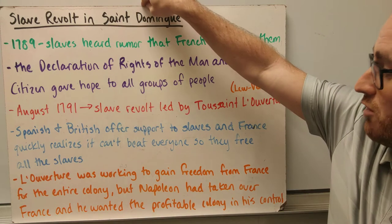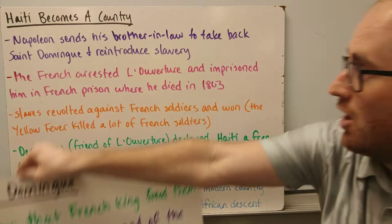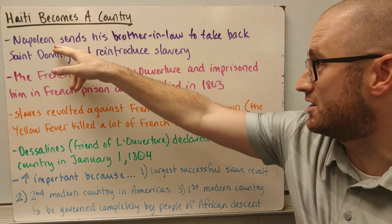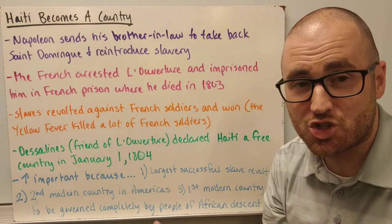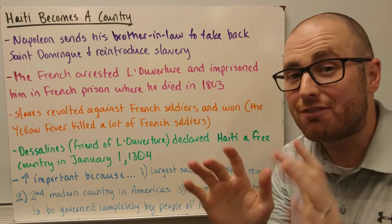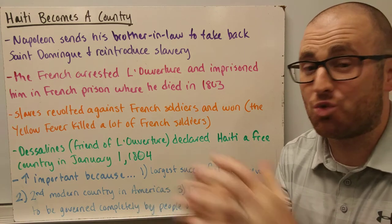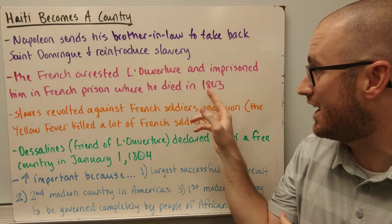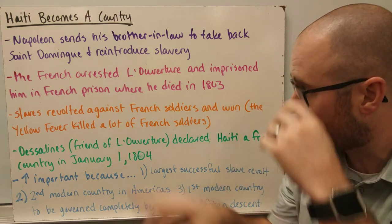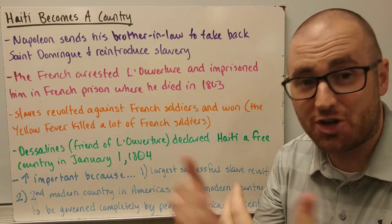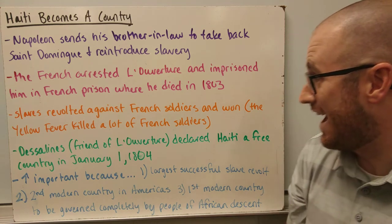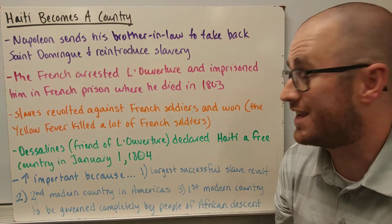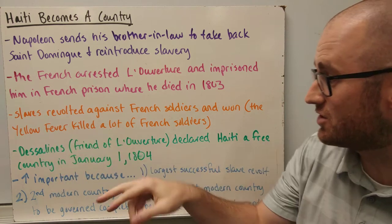Even though the French had freed all the slaves and Louverture was working to make them an independent colony, Napoleon gained power after the French Revolution and wanted to take back control of the colony to get sugar production back up. The only way to do that was to send his brother-in-law over, retake control, and reintroduce slavery. So the French arrested Louverture and imprisoned him in France, where he died in 1803. The slaves revolted against the French soldiers, and yellow fever also killed many of those soldiers who had never been exposed to the disease.